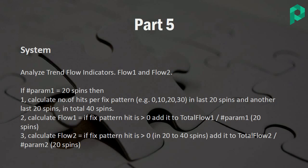I calculate the flow as follows: if a fixed pattern's hit ratio is higher than zero — meaning it hit at least once in the last 20 spins — I add it to the total flow sum. So I'm summing all ten fixed patterns, but only those with a ratio above zero contribute. You then sum up the hitting frequency of these fixed patterns and divide by parameter one, which is 20 spins.